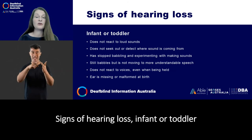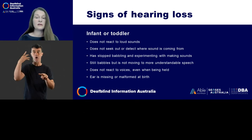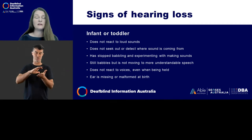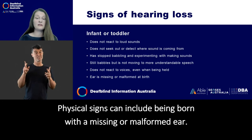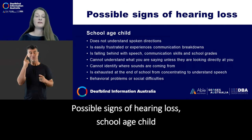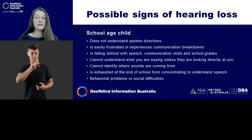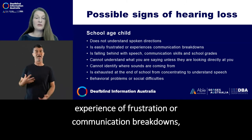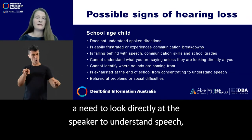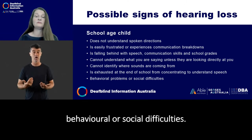Signs of hearing loss — infant or toddler. For an infant or toddler, these may include no reaction to loud sounds, no seeking out of the sound source, a cease or decline in babbling, or babbling is present but not progressing towards sounding more speech-like, no reaction to voices even when being held. Visual signs can include being born with a missing or malformed ear. Possible signs of hearing loss in a school-aged child could include not understanding spoken instructions, experience of frustration or communication breakdowns, speech and language delays, low academic achievement, a need to look directly at the speaker to understand speech, cannot identify where sounds are coming from, exhaustion, and behavioural or social difficulties.